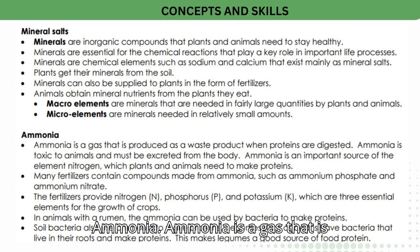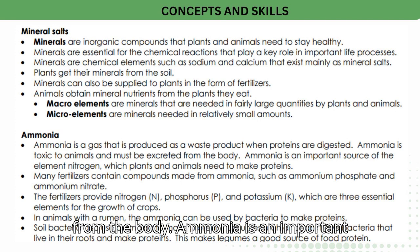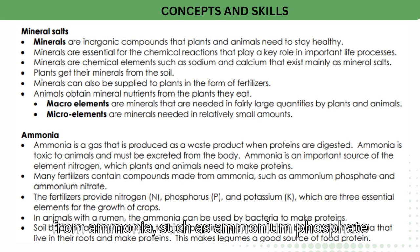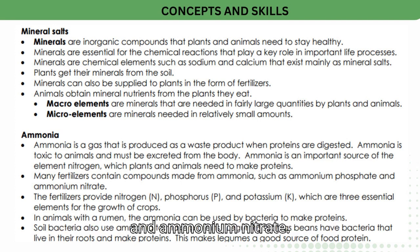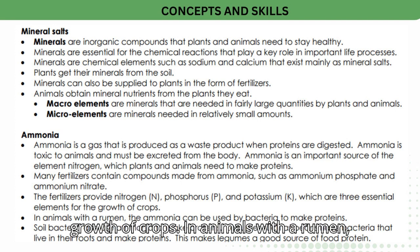Ammonia is a gas that is produced as a waste product when proteins are digested. Ammonia is toxic to animals and must be excreted from the body. Ammonia is an important source of the element nitrogen, which plants and animals need to make proteins. Many fertilizers contain compounds made from ammonia, such as ammonium phosphate and ammonium nitrate. The fertilizers provide nitrogen (N), phosphorus (P), and potassium (K), which are three essential elements for the growth of crops.